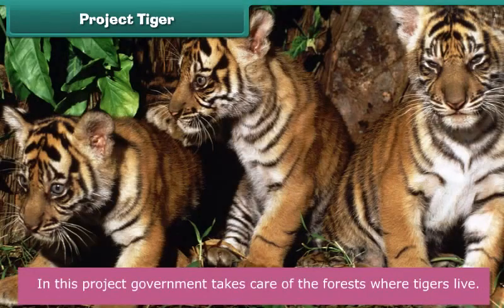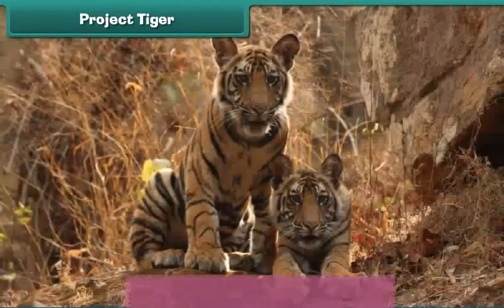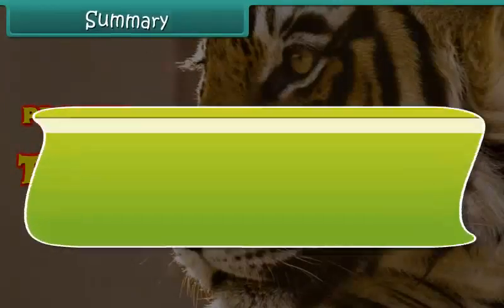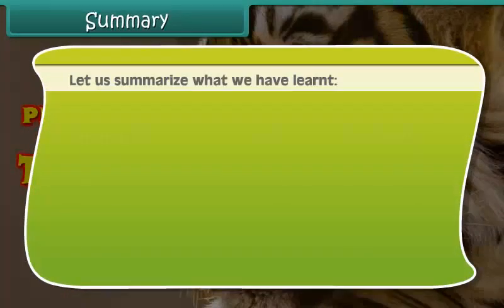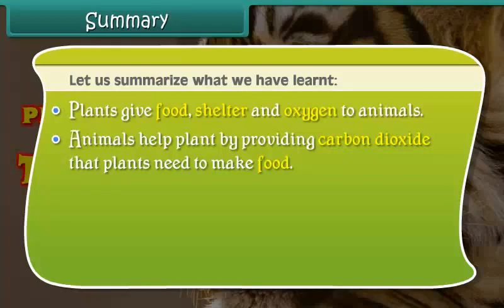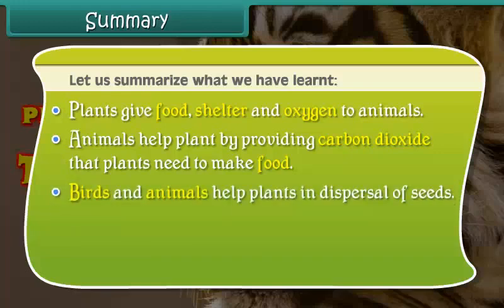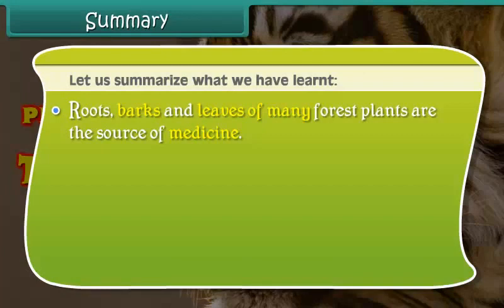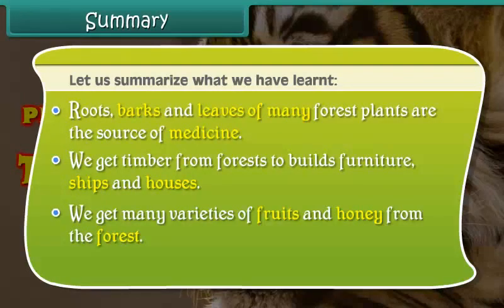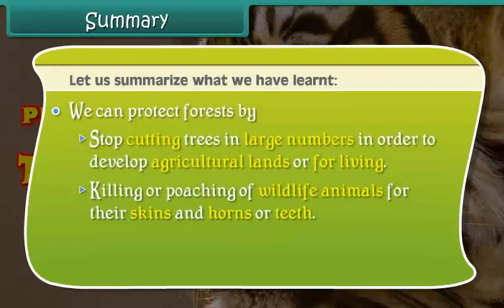Project Tiger. Ram saw a board written 'Save the Tiger' and asked his uncle why. His uncle replied that from the very beginning, man has been involved in poaching to satisfy his greed for animal skin, bones and claws, without caring for its effect on the diversity of the world. As a result, some species have already faded away from earth forever. The Indian tiger is also one of them. The Government of India has taken the initiative to save the tigers, called Project Tiger. In this project, the government takes care of the forests where tigers live, called tiger reserves. Killing tigers and cutting trees in these forests is a punishable act.